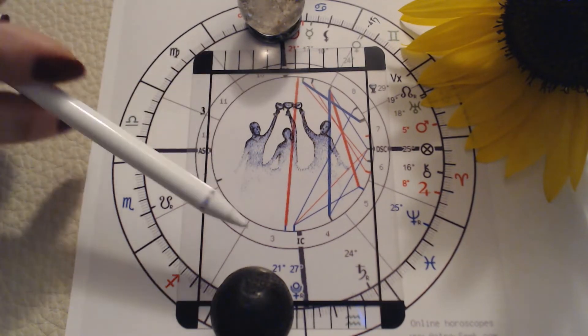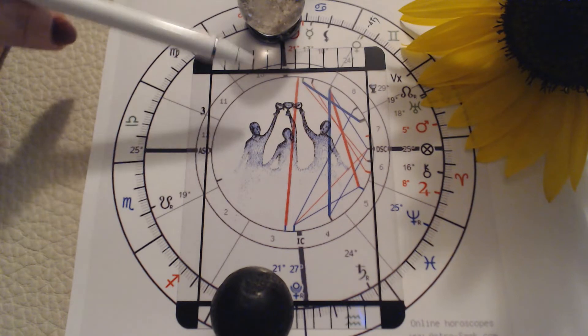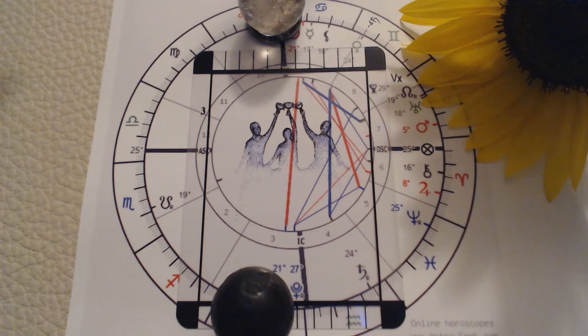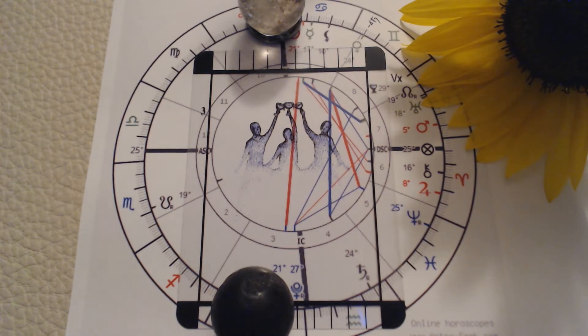Before the moon makes this opposition to the sun, look at that, 21 degrees. 2121, that's a master number. Capricorn's a master builder, right?